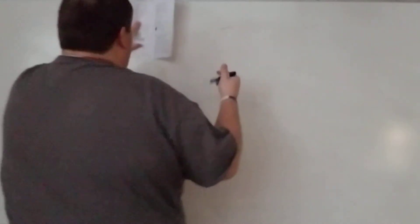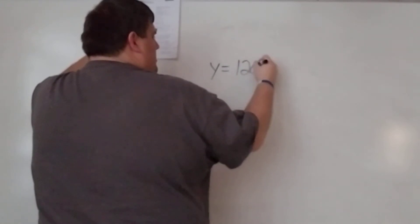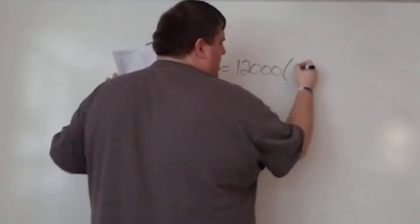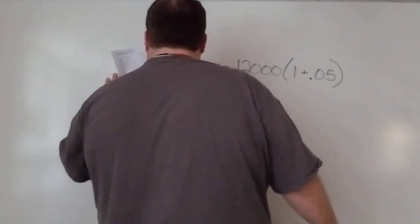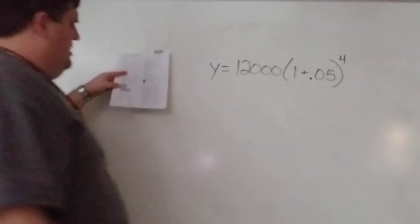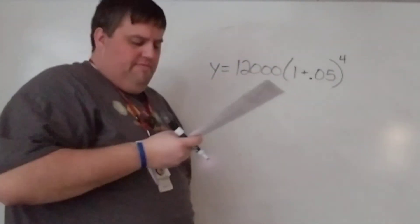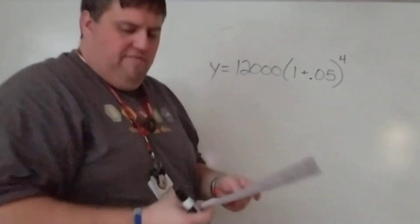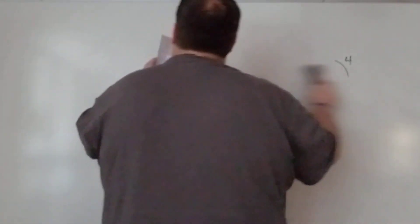Number ten: the population is 12,000 — that's our starting point. It grows at a rate of five percent per year, so we have a plus with 0.05 as the decimal, and we want how many people after four years. Plugging that in gives answer C: approximately 14,586.